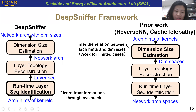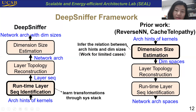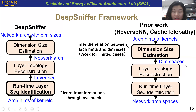For example, Reverse-N is based on an accelerator which assumes it can obtain full memory traces of weight and feature map data. And CacheTelepathy assumes that only GEMM-based implementations are used for the convolutional layer. So in their first step, the dimension sizes cannot be accurately estimated — they can only obtain dimension spaces. Based on these spaces, they need to infer the topology and layer sequence, so they cannot obtain an exact network architecture, just a reduced search space.